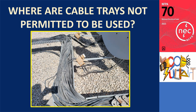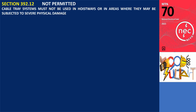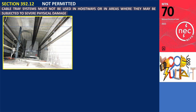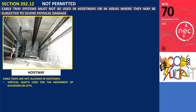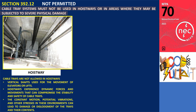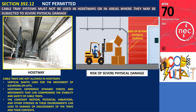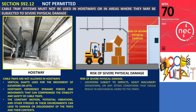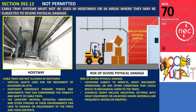Where are cable trays not permitted to be used? Section 392.12 Use Not Permitted. Cable tray systems must not be used in hoistways or in areas where they may be subjected to severe physical damage. Hoistways are vertical shafts used for the movement of elevators or lifts; the constant motion, vibrations, and other stresses in these environments can lead to damage or dislodgement of the trays and their contents. Additionally, cable trays should not be installed in locations subject to impacts, heavy machinery operations, or any other conditions that could result in mechanical harm, such as industrial settings where materials are frequently moved or dropped.